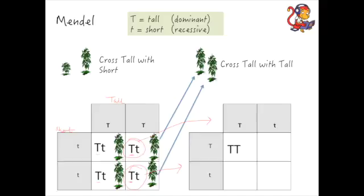And this time he ends up with TT, capital T lowercase t, capital T lowercase t, and two lowercase t's. So as you can see here, he's got dominant alleles for tall in three of the offspring, so in three quarters of the offspring there's a dominant allele.